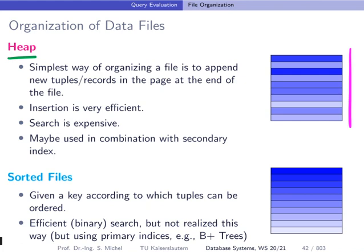What are the pros and cons? The good thing is that insertion is very efficient because we just append at the end of the file. On the other hand, if you search for one specific value — for instance one matriculation number — we have to find this position by going through the file in a linear, sequential fashion. This is of course not very cheap. We will see later that a heap structure might be used in combination with a secondary index.